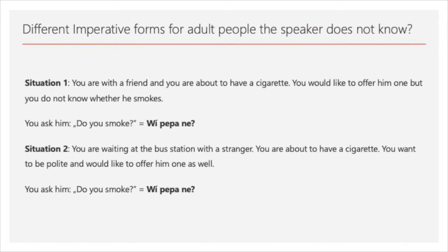My next question was whether Ihanzu has different imperative forms for people they know well versus people they don't know. I presented Nico with two situations: first, with a friend about to have a cigarette, asking 'do you smoke?' — he said 'we pepane'. In the second situation, waiting at a bus stop with a stranger and wanting to be polite — he also said 'we pepane'. The forms are completely identical, and when I asked him directly he confirmed it.